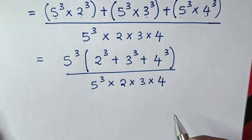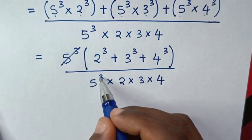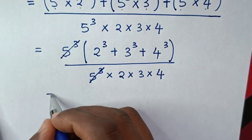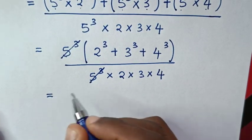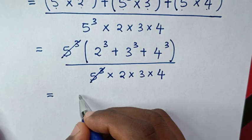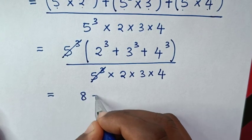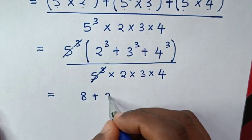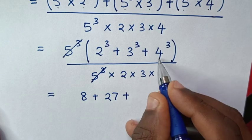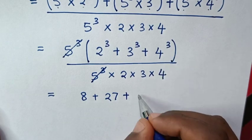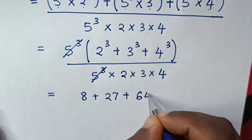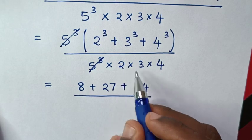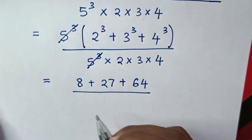Then to simplify, 5 power of 3 will cancel with 5 power of 3. So it will be equal to 2 power of 3 is 8, plus 3 power of 3 is 27, plus 4 power of 3 is 64, then over 2 times 3 times 4.